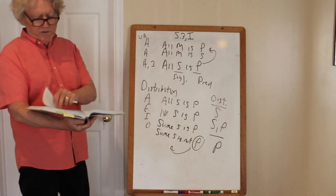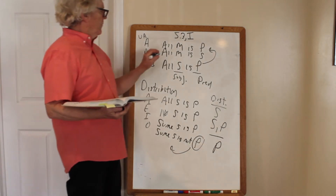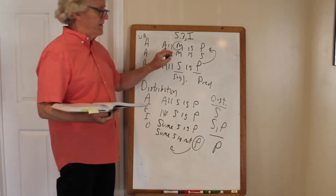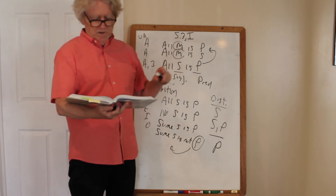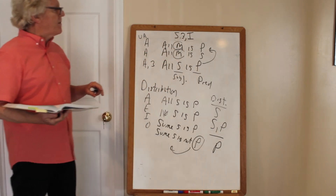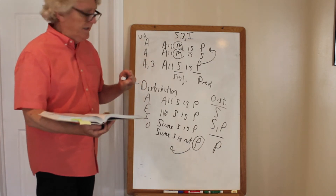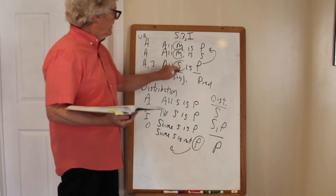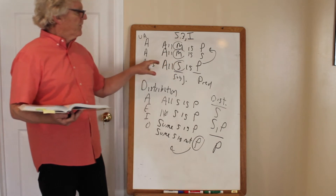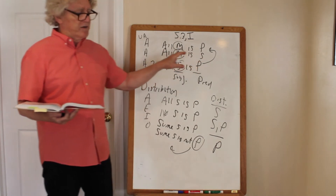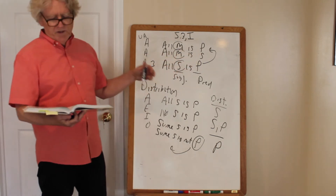Now back to the rules. Rules one and two involve distribution. Rule one: the middle term must be distributed at least once. In premise one, all M is P — we are distributing M. That checks out. Rule two says if a term is distributed in the conclusion it must be distributed in a premise. In the conclusion all S is P, the S term is distributed — all tigers have stripes, we're distributing S. But in premise two, all M is S, that distributes M but not S. So this violates rule two.